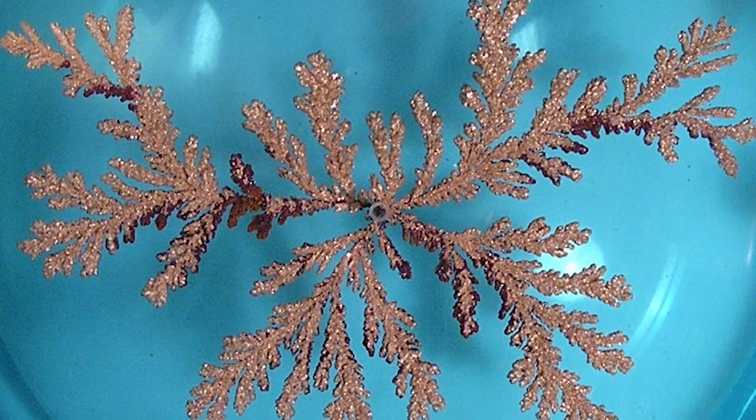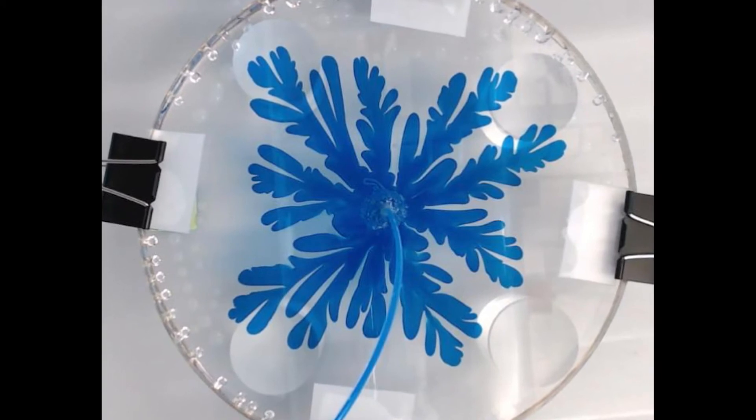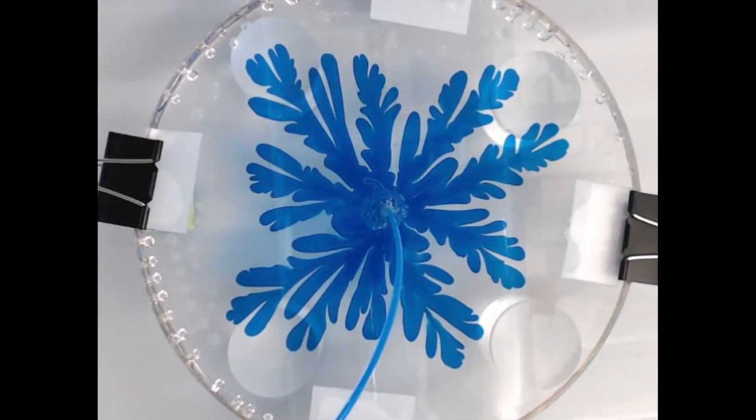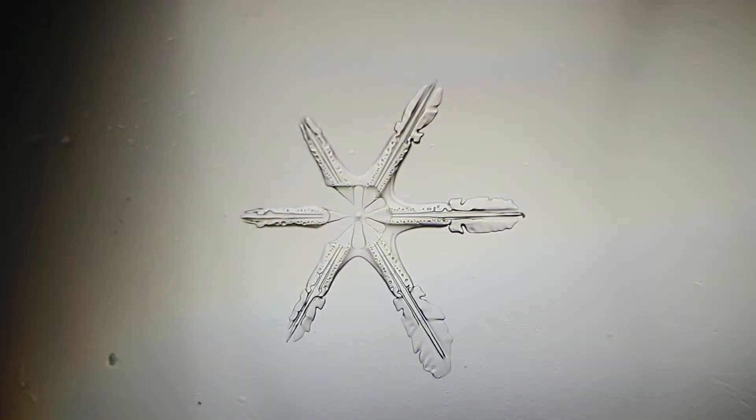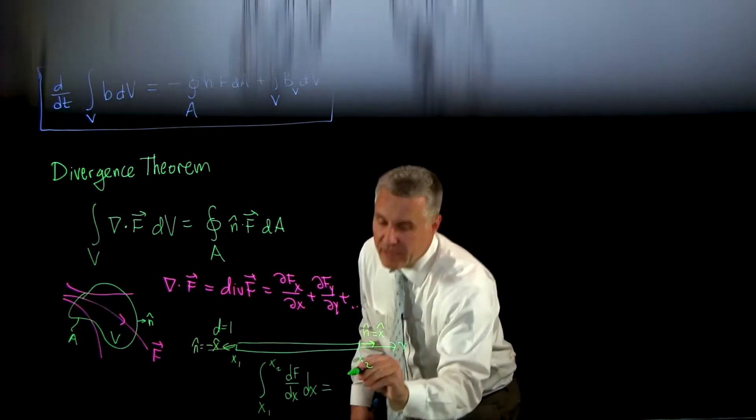For example, copper electrode deposits can resemble viscous fingers that arise when water displaces oil in a porous medium, or snowflakes resulting from solidification limited by heat conduction.